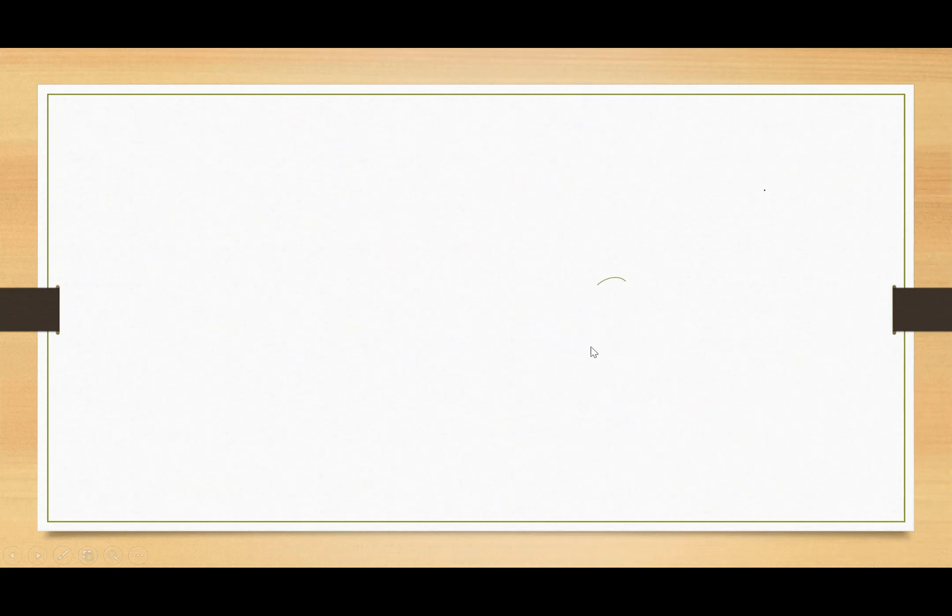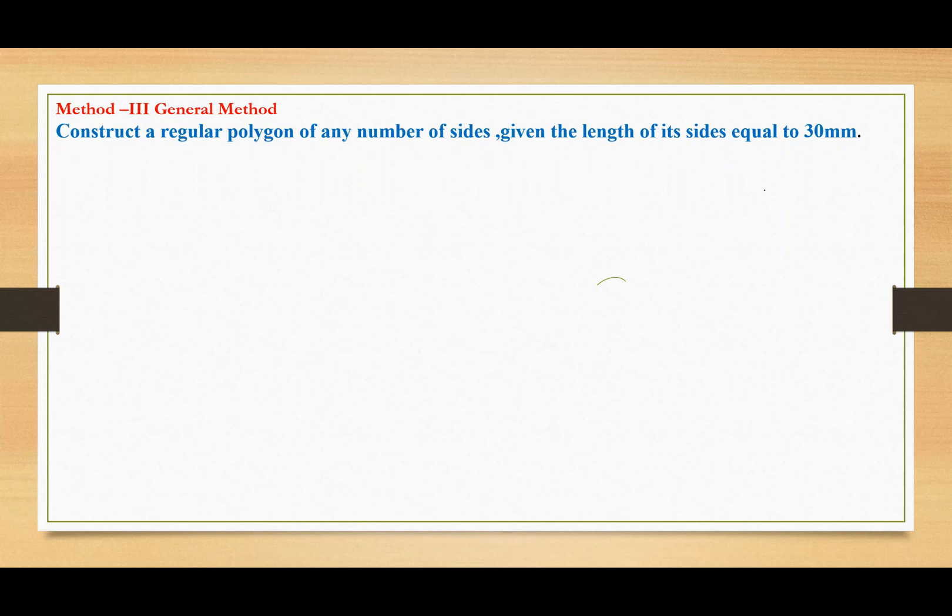Hello dear students, now I'll explain Method 3, the general method. You already know Method 1 and Method 2. Method 1 is the base angle method, Method 2 is the exterior angle method. Now, how to draw a polygon using this method? Here we'll construct a regular polygon of any number of sides.